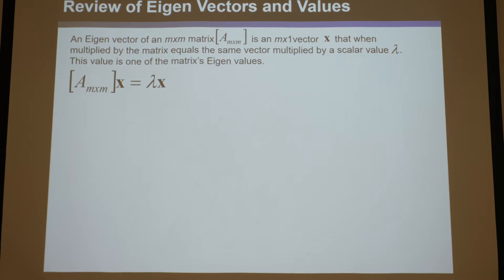You take a vector, multiply it by a matrix, and you get the same vector multiplied by some scalar value — that is the eigenvector, and lambda is its corresponding eigenvalue. So if I have a matrix A that is m by m, how do I find those eigenvectors and eigenvalues?